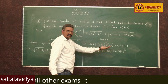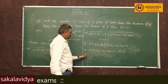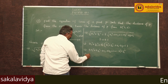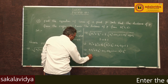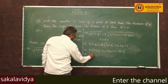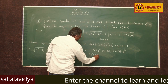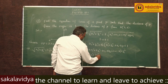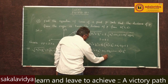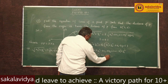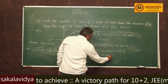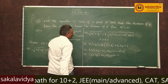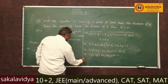Bringing x1 square plus y1 square to the left side, we get: 3x1 square plus 3y1 square minus 8x1 minus 16y1 plus 20 equals 0. Therefore, the equation of the locus is: 3x square plus 3y square minus 8x minus 16y plus 20 equals 0.